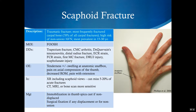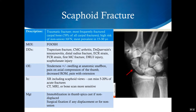The main finding to watch for is tenderness in the anatomic snuff box, proximal to the base of the thumb, between the extensor pollicis longus and brevis tendons. You can see that in this picture. Other findings like swelling, decreased range of motion, and pain with wrist extension are common but less specific. X-ray is the initial investigation, and it should include scaphoid views, but it can still miss a fracture.